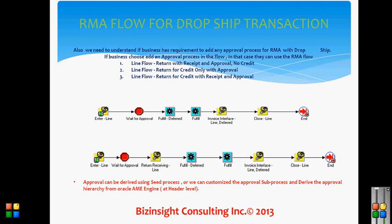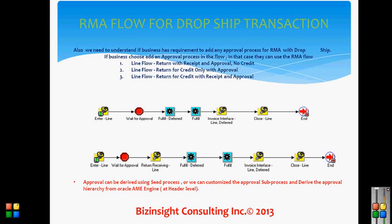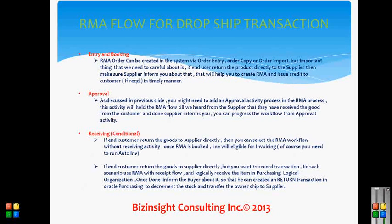This is the workflow being discussed. If you don't want to progress your RMA for the dropship until the supplier informs you, you can put a wait activity to halt the progress of the workflow. This wait-for-approval activity is useful not only for waiting on supplier confirmation, but also when your organization has a business rule requiring RMA approval by a higher authority. Either way, you can use this approval or wait activity in your RMA workflow.